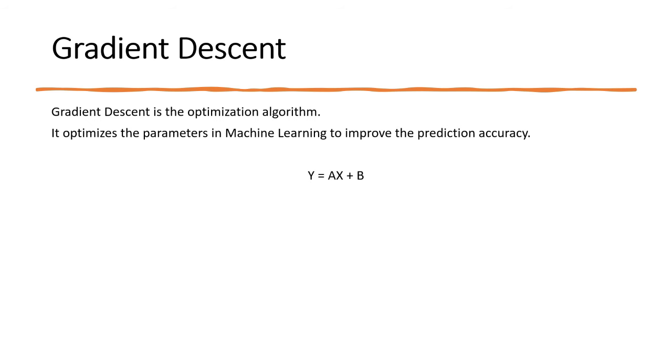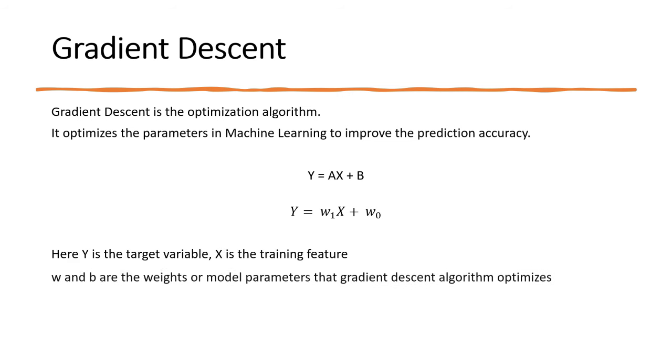So let's look at the most basic formula for machine learning. If you watched my video on linear regression, I explained how this formula works for prediction, and in my neural network video, I explained how this simple formula can develop much more complex algorithms. Just to adjust with the machine learning language, I'm replacing a with w1 and b with w0, where w1 and w0 are the model parameters, we can call them weights as well, that gradient descent algorithm optimizes.